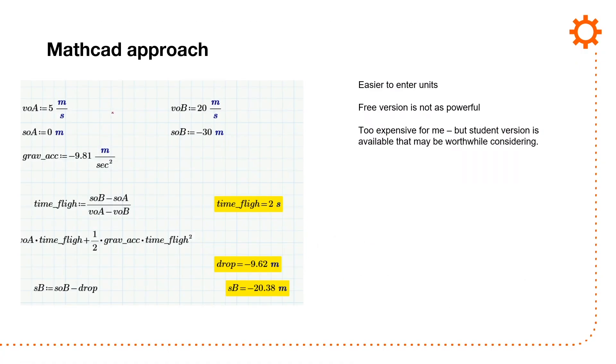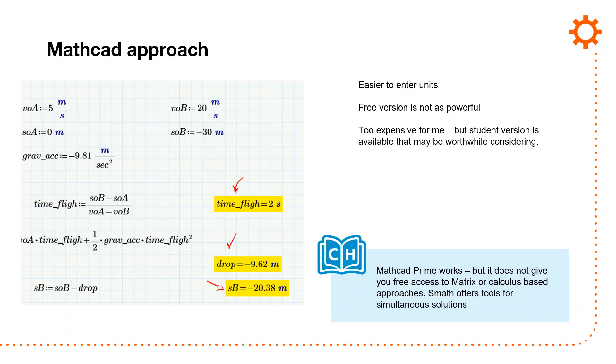If you do it in terms of the MathCad approach, it's the same thing. The unit entry is a lot easier, and you get the same results, 2 seconds, minus 9.62, and minus 20.38 meters. It's not able to do the same type of complex equations as you can do in S Math. So I'll do another video later where I look and I do some derivatives. And it's really nice because I can do those directly in S Math Desktop. I can't do it in MathCad because the free version is not quite as powerful.